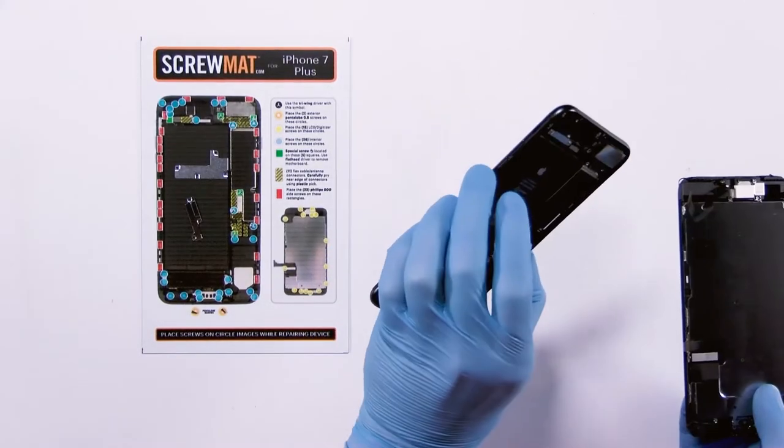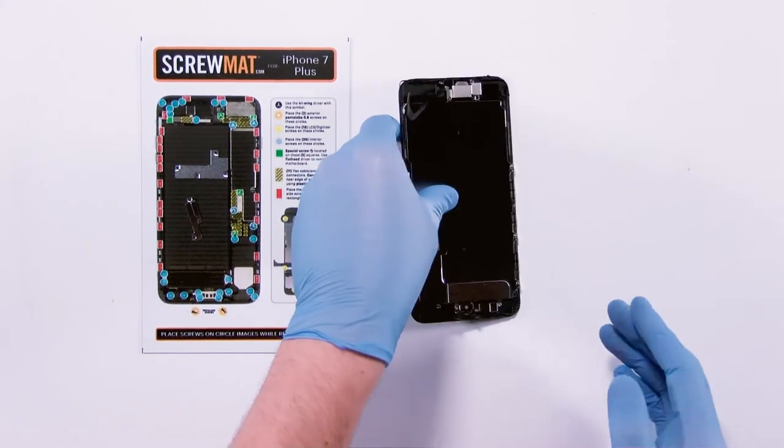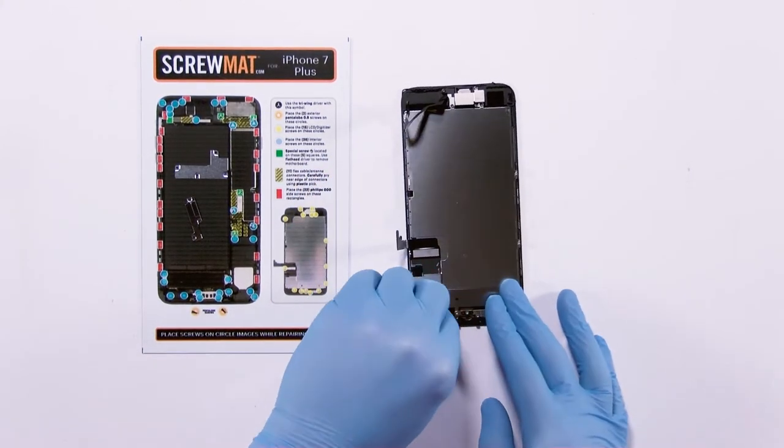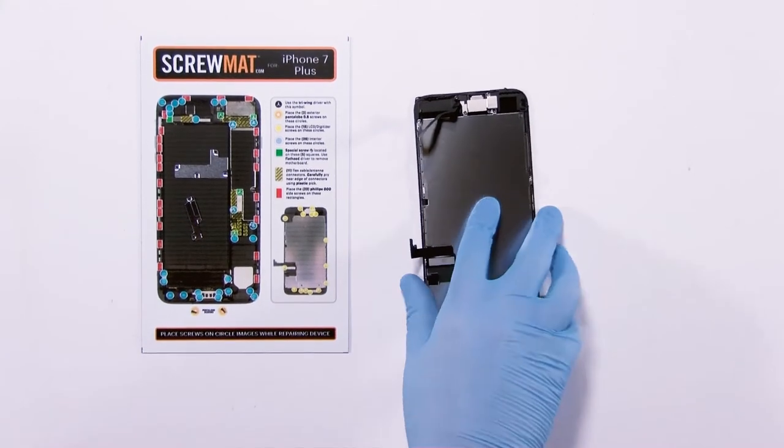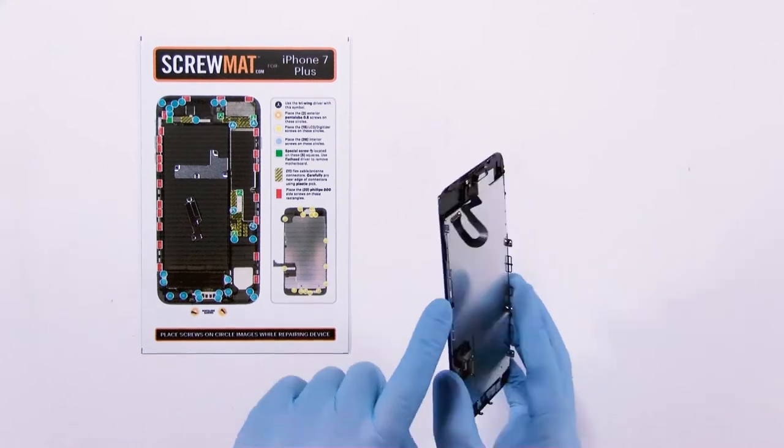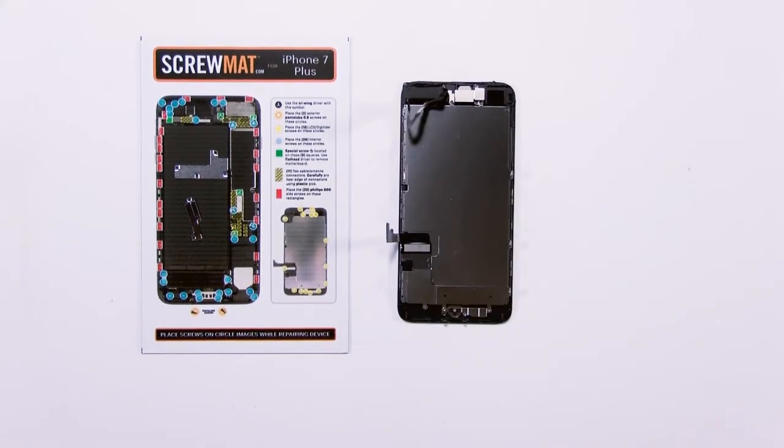So now we're done with the frame and the board. We're just going to get ready to install the stuff to the new screen. You'll notice if you're replacing the screen your new screen won't have a home button and won't have the front camera proxy flex. We're going to move all that over and I'll show you how to do that.